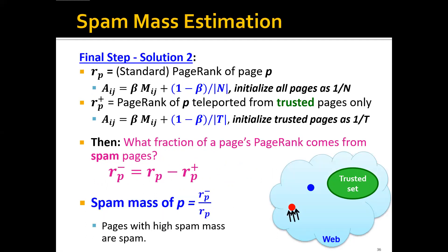To compute the spam mass, we first compute the standard PageRank score RP of a page. This is the sum of two terms: beta times M, the original stochastic matrix, and (1 - beta) over N, the teleport term where N is the total number of web pages. Initialization sets all pages to 1 over N. Then we compute the PageRank of page P teleported from trusted pages only — essentially topic-specific PageRank where the teleport set is the set of trusted pages.